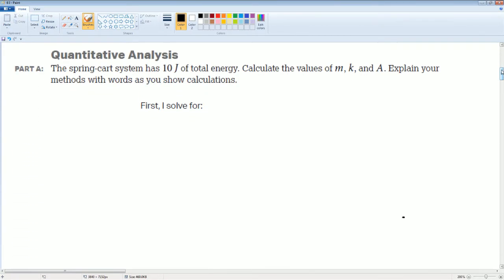The spring system has 10 joules of energy. You're going to calculate M, which is mass, K, spring constant, and A is the amplitude. Explain your method. So first of all, I'm going to start for M.